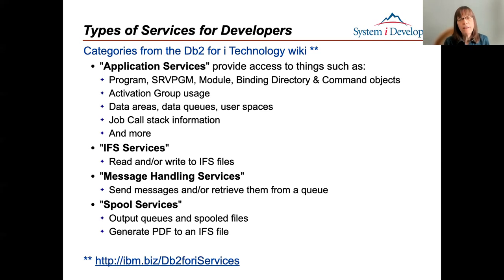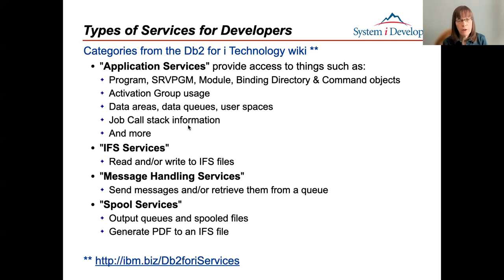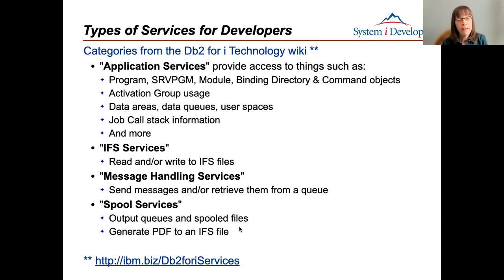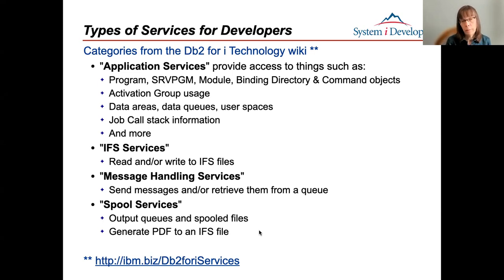My challenge to you is to think of ways you can use these - not necessarily to figure out how you'd use the specific thing I've done, but to open your mind to: if I had something like that, what might I do with it? Could I make something better, create a new utility? There's a db2 for i Technology Wiki with a link at the bottom of this chart where the services are categorized. The ones I'm concentrating on here are the Application Services.